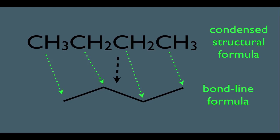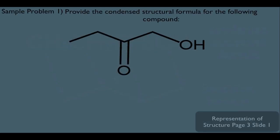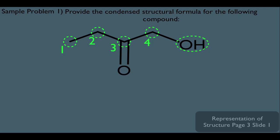So to make sure you have this skill, let's look at a sample problem here. This one is asking us to provide the condensed structural formula for this particular compound in the bond-line formula. Now remember what we said, every end point and every bend point is a carbon. So we would interpret this as one carbon right here, a second carbon here, a third carbon here, a fourth one here, and then we have an OH. So what that means, below we would put carbon one, carbon two, carbon three, carbon four. And carbon four happens to be directly connected to an OH, and that's how we interpret it.